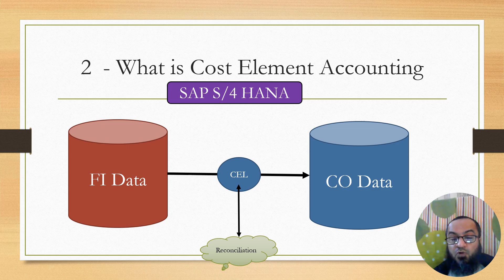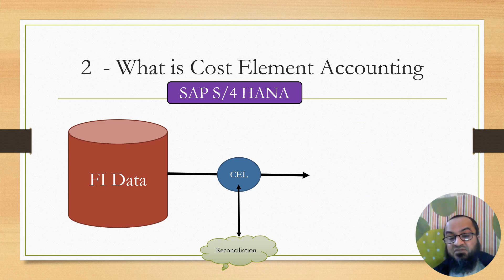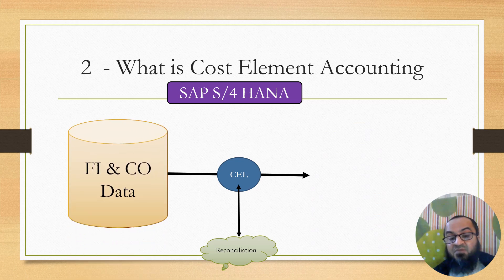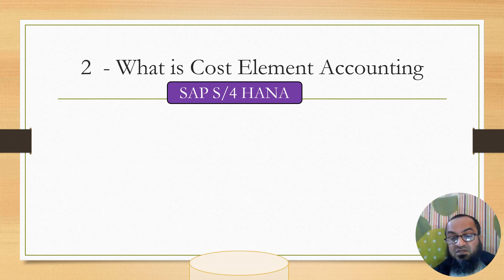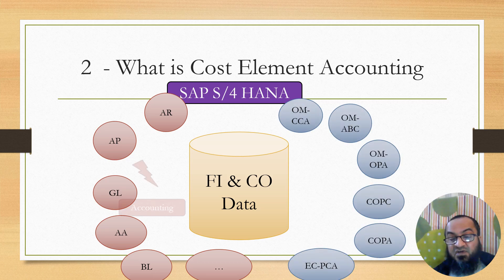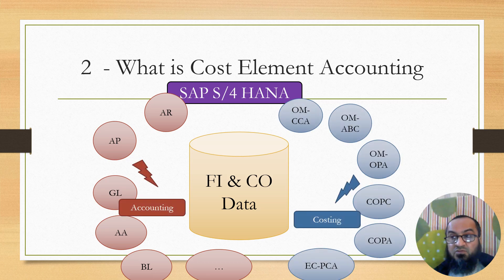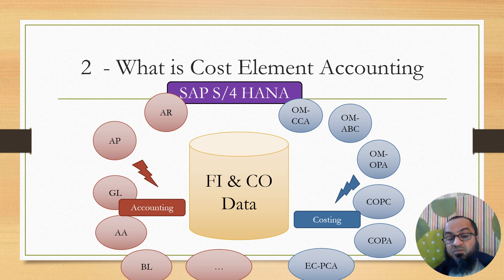Moving forward to SAP S/4HANA, there were some basic structural changes. Number one: the Controlling dataset as a separate dataset no longer exists. Instead, there is now a combined FI/CO dataset. So there is no need for cost element accounting as such. However, since functionally the accounting modules are still different from the costing modules, the segregation of applications is still there — Financial Accounting modules retrieve data from the combined FI/CO dataset, and Controlling modules also retrieve data from the same combined FI/CO dataset.